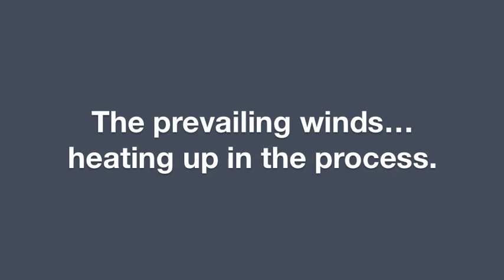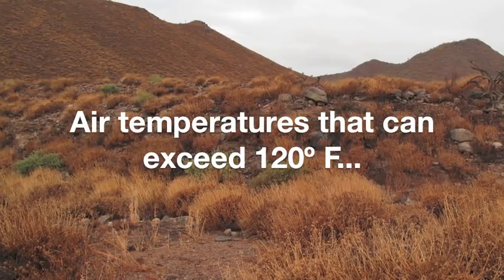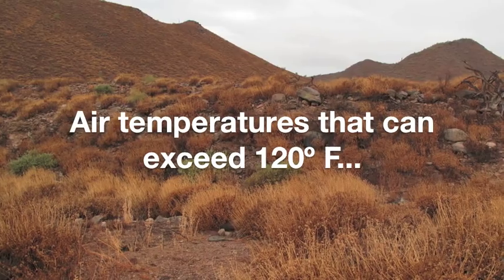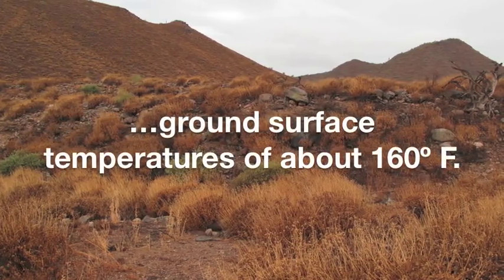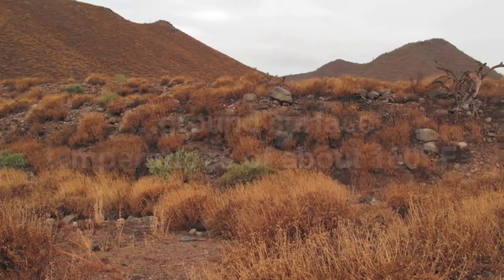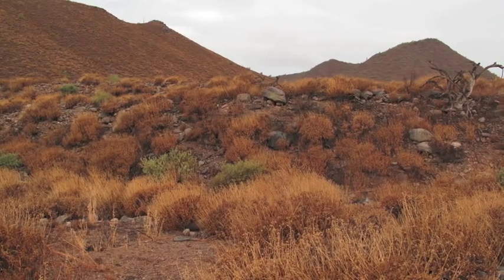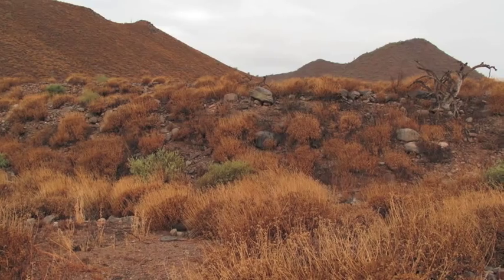The prevailing winds from the west have come down from the California coastal mountains, heating up in the process. The result of all these factors is air temperatures that can exceed 120 degrees, and ground surface temperatures up to about 160 degrees. These temperatures would be lethal to most plants and animals without some successful protection strategy.